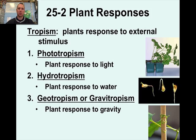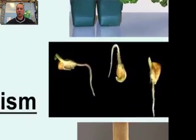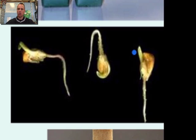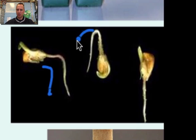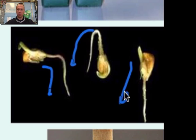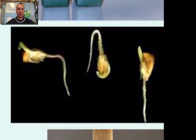Geotropism is seen over here to the right. This picture shows plant seeds — no matter which orientation they're planted in, the root tends to always grow downward. You can see this root's growing down, this root's growing down, this root's growing down, no matter which way the seed is planted, and the shoot grows upward. That is geotropism, or a plant's response to gravity.